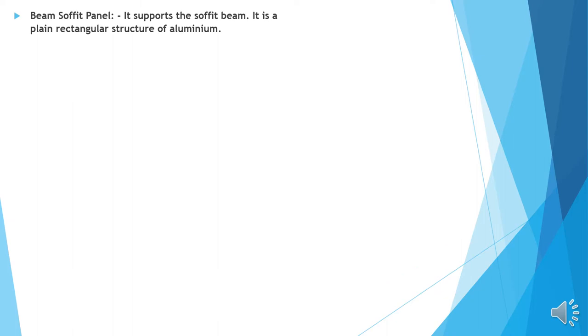Beam soffit panel: It supports the soffit beam. It is a plain rectangular structure of aluminum. This is the image of it.